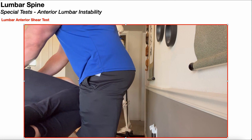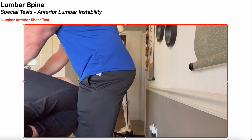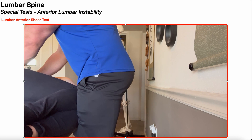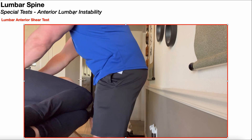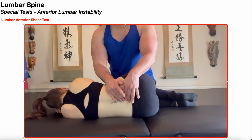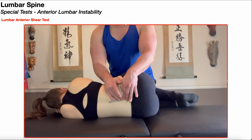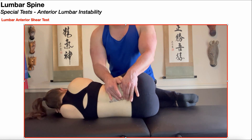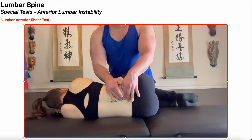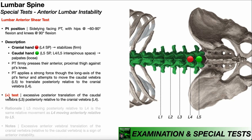I'm feeling for excessive movement of L5 relative to L4. Remember, we need to stabilize L4 firmly. If a person does not have anterior lumbar instability at this segment, you shouldn't feel anything significant or noticeable at your fingertips. A positive anterior shear test would be indicated by excessive posterior translation of the caudal vertebrae — L5 — posteriorly relative to the cranial vertebra, L4.